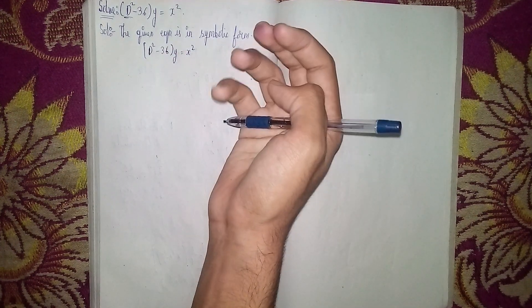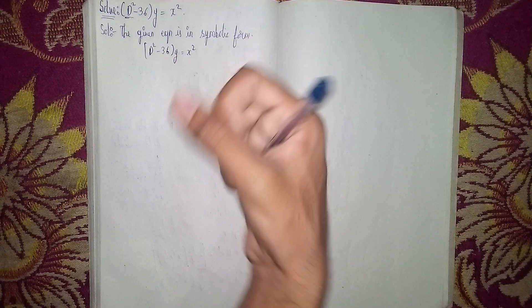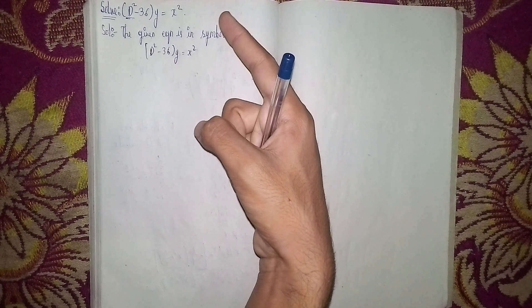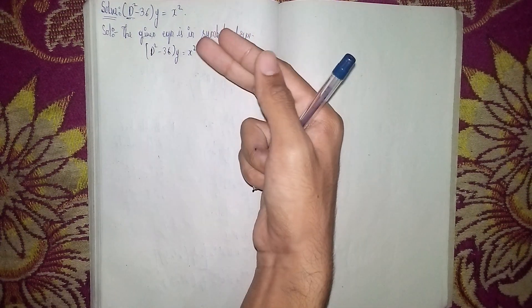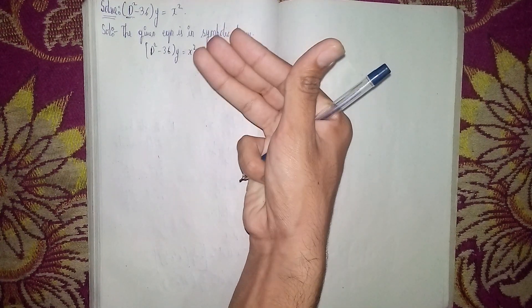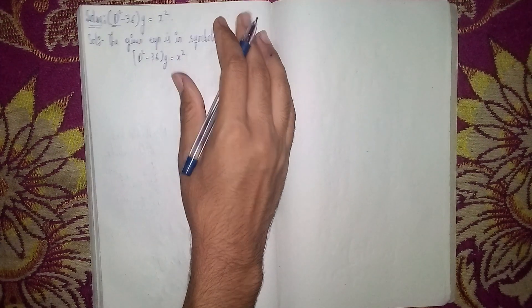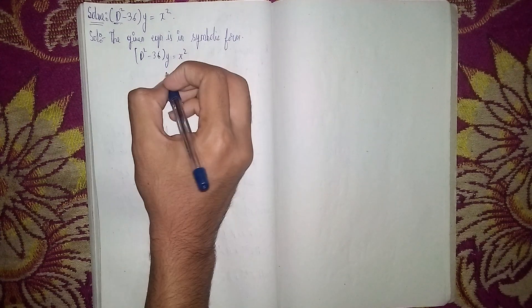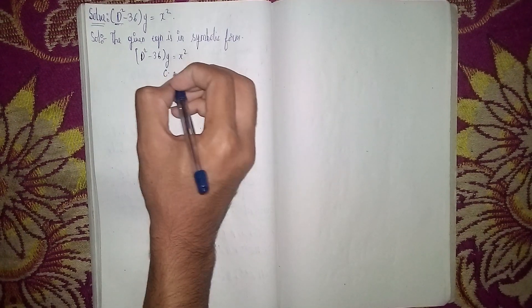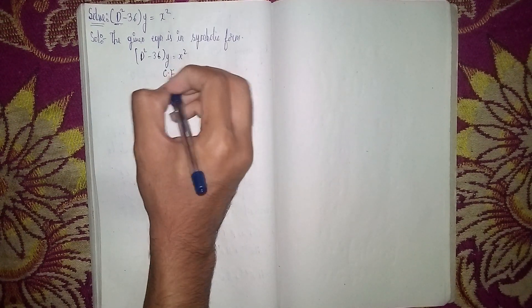There are three steps to solve this question. First step is to find the complementary function. Second step is to find the particular integral. Third step is to find the general solution. So first, we find the complementary function.